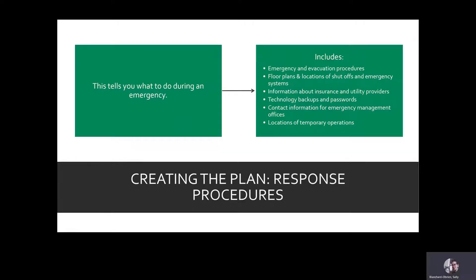Next, we have the guidelines for how to respond during an incident. These response procedures tell you what to do during an emergency as it's happening. This includes procedures for evacuation and other emergencies, floor plans with locations of shutoffs for water and other building systems, information about your insurance and utility providers, technology backups and passwords, contact information for local emergency management offices, and locations of sites that could be used for temporary operations or salvage recovery. This is all the stuff that gets you through the moment and helps set you up for the recovery phase.